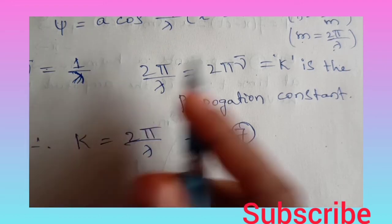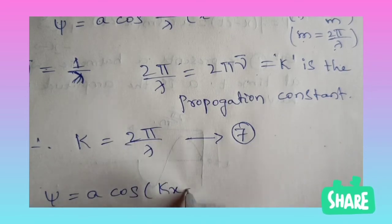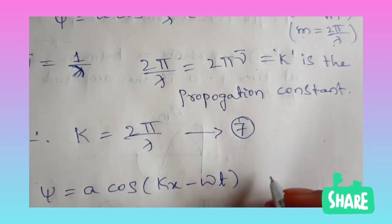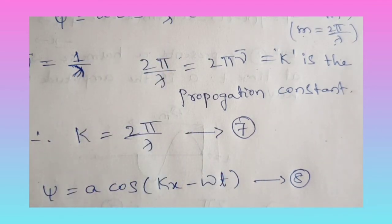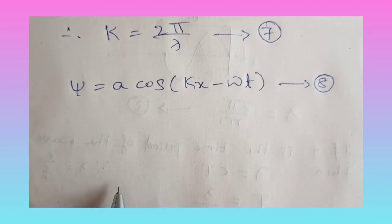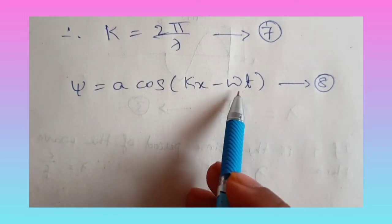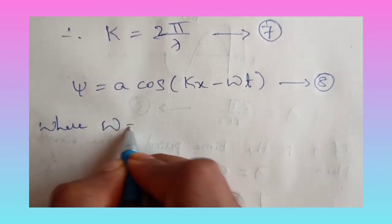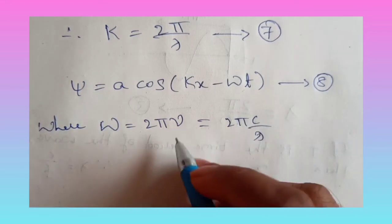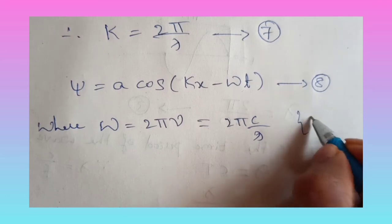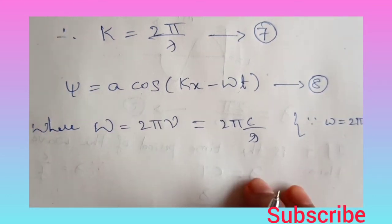Now we can write equation six in the alternate form as psi equals A cos(kx minus omega t). This is equation number eight. In equation six we substituted 2π/lambda with k, giving A cos(kx minus omega t), where omega equals 2π nu equals 2πc/lambda. Here omega is the angular frequency, defined by 2π times frequency f.